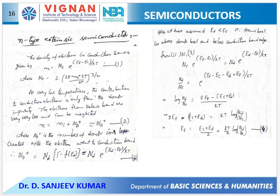Next comes the case of n-type extrinsic semiconductors. Here we are doping with a pentavalent impurity, and we will have electrons from both the dopant atom and from the intrinsic material. The total contribution to the number of electrons will be the number of intrinsic electrons from bond breaking, plus the number of donor atoms getting ionized — we consider only the donor atoms that are ionized.